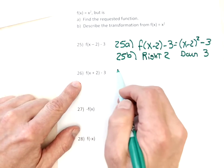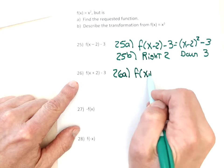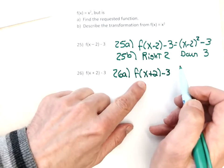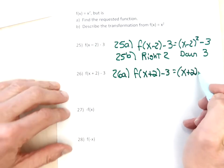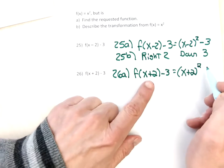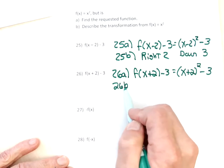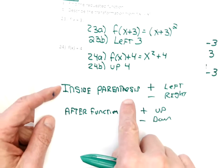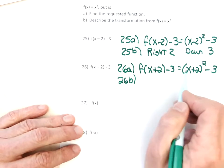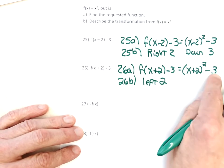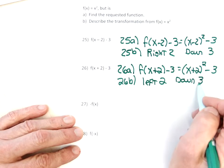For problem 26, to find the function: f of x plus 2 minus 3 — the plus 2 is inside a parenthesis, so it needs to be inside a parenthesis with an exponent of 2, and then the minus 3 goes afterwards, giving (x+2)² - 3. To describe: plus inside the parenthesis moves it left, minus after the function moves it down — so it goes left 2 and down 3. If that were a plus 3 it would be up 3.